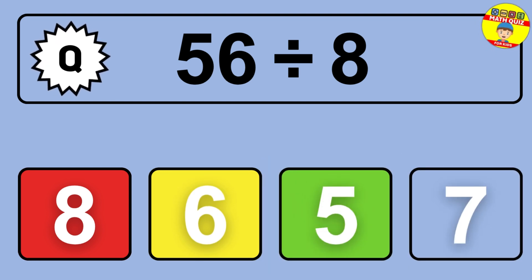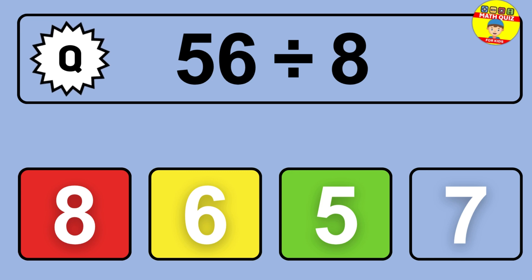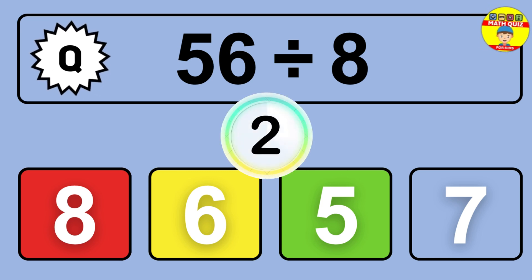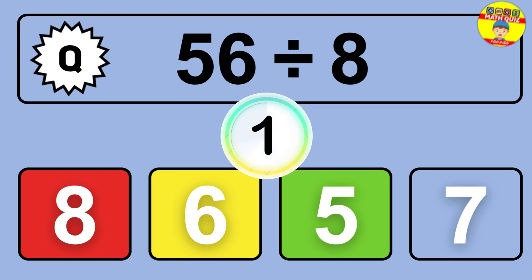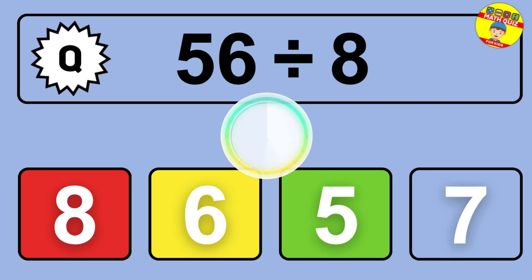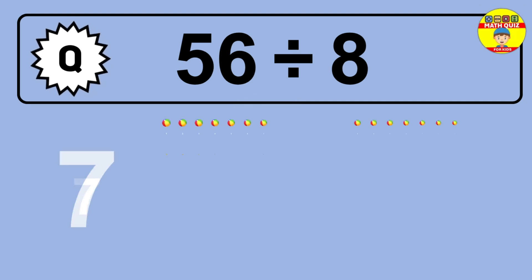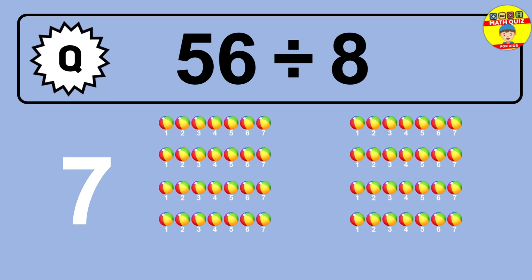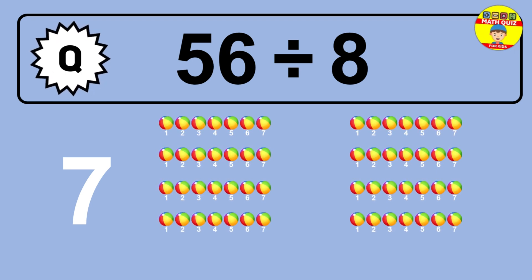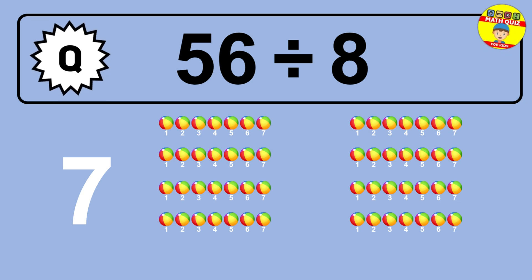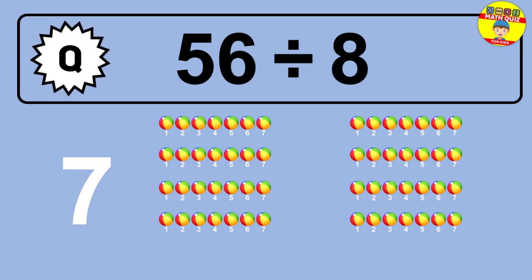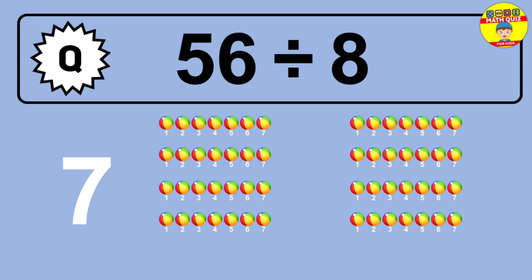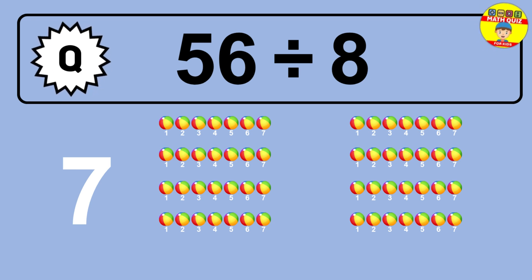56 divided by 8 is... time to think. Let's go to the solution. Divide the number 56 by 8. Each group contains 8 units, so dividing 56 by 8 results in 7 equal groups. Thus, the result is 56 divided by 8 equals 7.